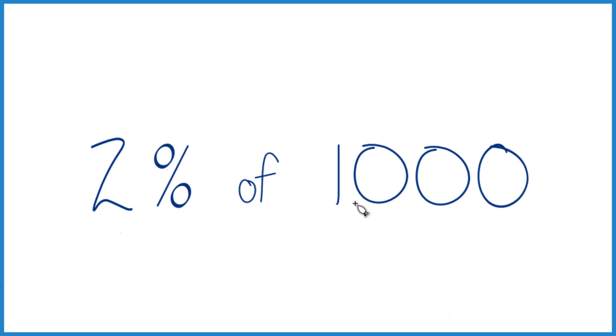One way to think about this is 2% of 100, that would just be 2. So 2% of 1,000, we have another place, that would be 20. 2% of 1,000 is 20.